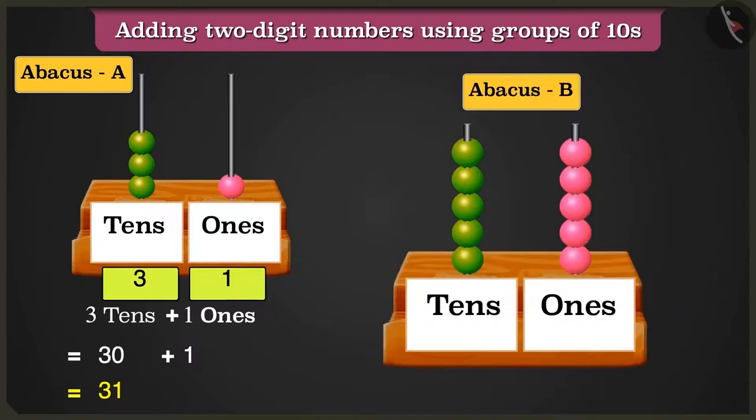Look, here in abacus B, the tens box has 1, 2, 3, 4, and 5 beads. And the ones box has 1, 2, 3, 4, and 5 beads.